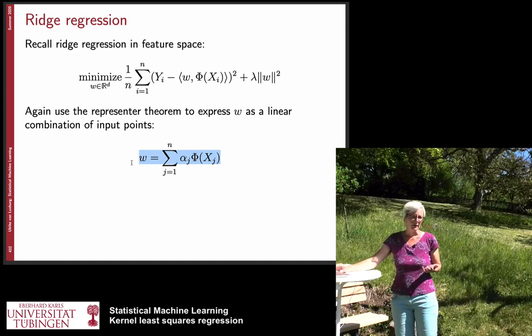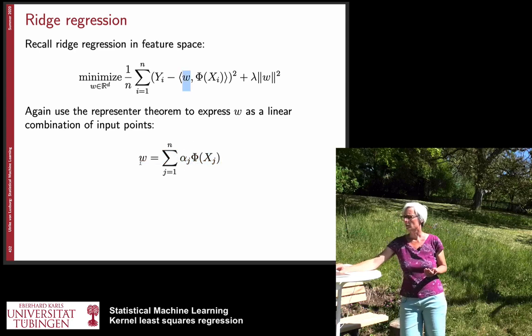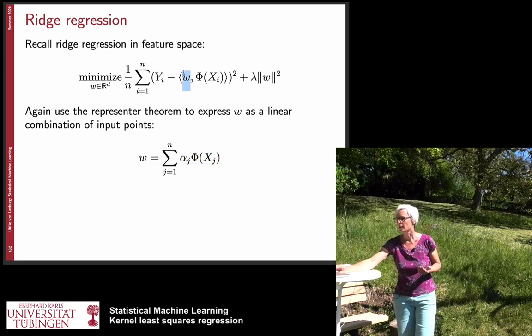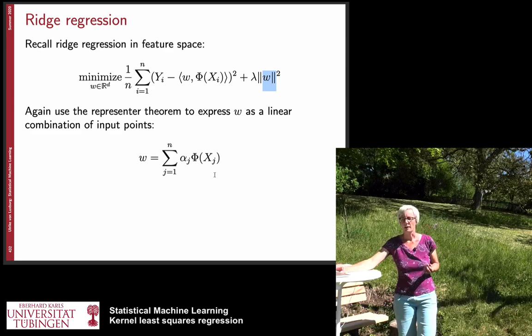Now again we use the representer theorem and then replace everything you can already see where it's heading to. So here this w will be replaced by the sum and again the scalar product is going to pop out here and similarly here in the norm when we plug in w we will again end up with a scalar product which just has the phi xi phi xj inside.